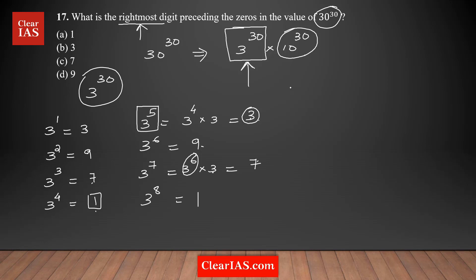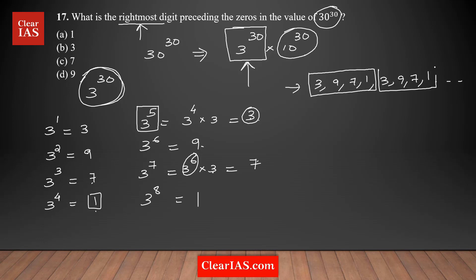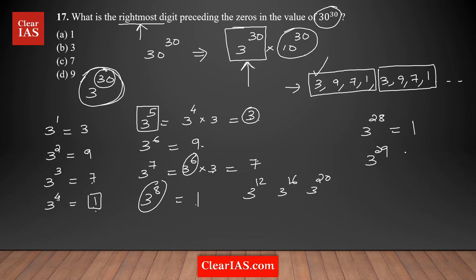The pattern is 3, 9, 7, 1 repeating with a cycle length of 4 — that is the cyclicity. Any multiple of 4 in the power will end with unit digit 1, so 3^4, 3^8, 3^12, ..., 3^28 all end in 1. The closest multiple of 4 to 30 is 28, so 3^28 ends in 1. Then 3^29 is next in the cycle: unit digit 3. And 3^30 is the next: unit digit 9. So the unit digit of 3^30 is 9.